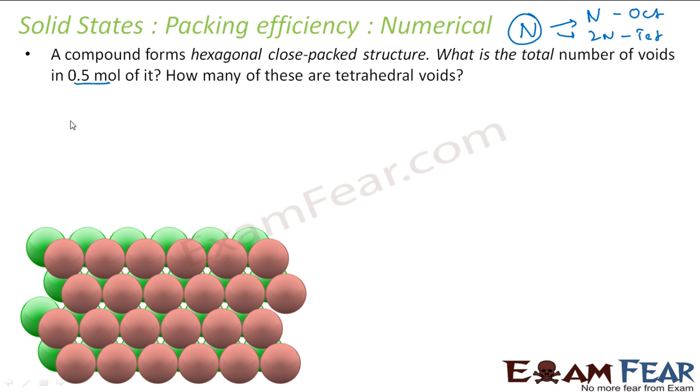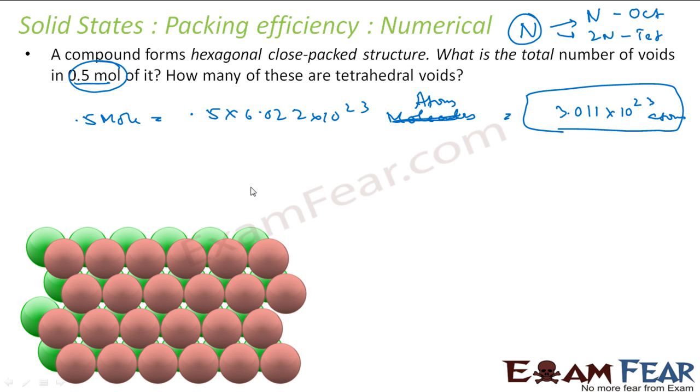So if we can just find the number of molecules, we can easily find the number of octahedral voids. It's 0.5 mole. So 0.5 mole means 0.5 × 6.022 × 10^23 molecules or atoms. This is nothing but 3.011 × 10^23 atoms. So we have these many atoms.